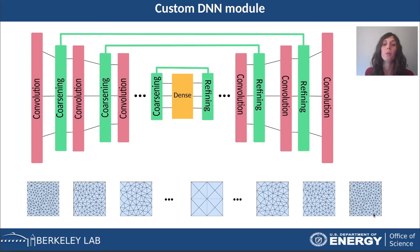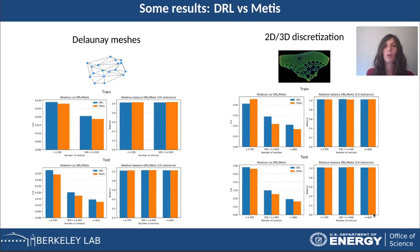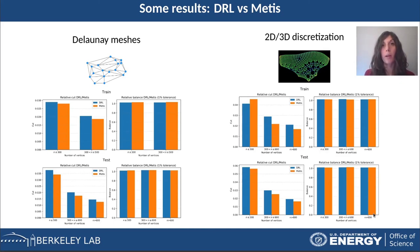So those were the two main ingredients of our deep reinforcement learning agent. We compared our agent with METIS, which is a popular software for graph partitioning. We tested our agent on two classes of graphs: the first constituted by Delaunay meshes, and the second by 2D-3D discretizations.